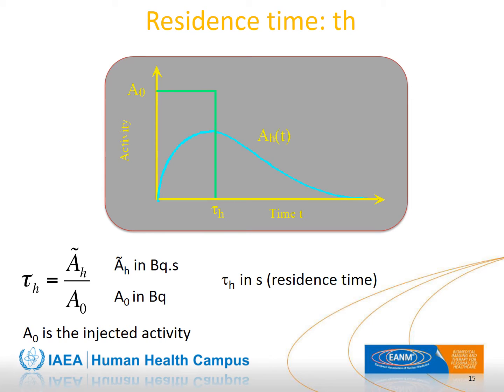An important concept is that of residence time. The residence time is obtained by dividing the cumulated activity by the injected activity. Since cumulated activity is in becquerel-seconds and injected activity is in becquerels, the result is expressed in seconds. The residence time is a means to compare the cumulated activity in different patients for the same injected activity, or for different injected activities.